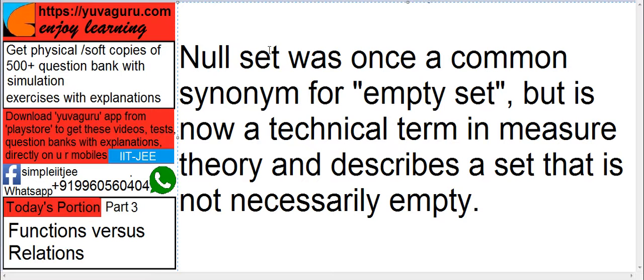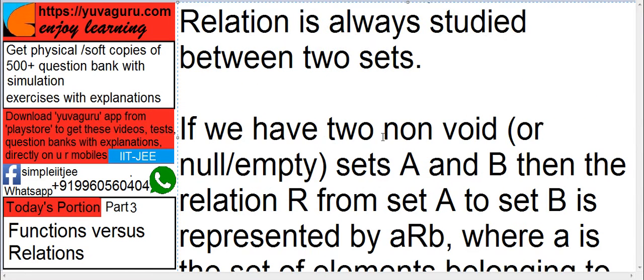That's why nowadays it's not called as null set. It's called as empty set. So, another name for void set is empty set. Some books may call it as null set, but it's not allowed nowadays. What we want is non-void set. Means there should be some element in that set. It should not be blank.